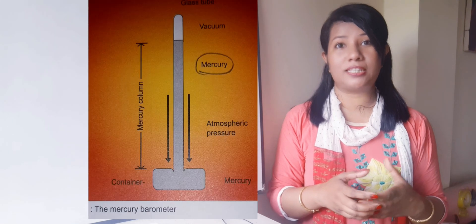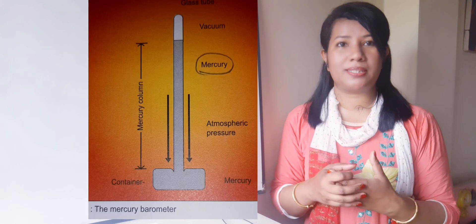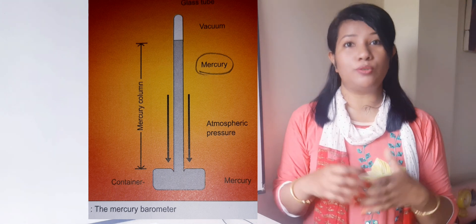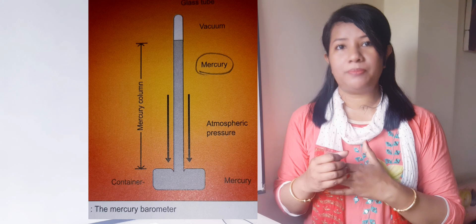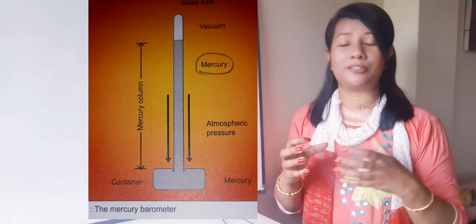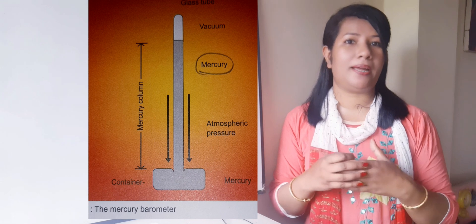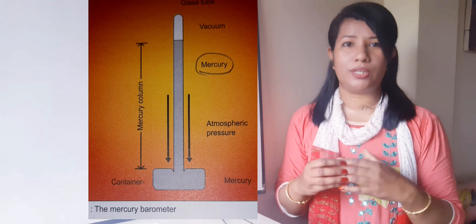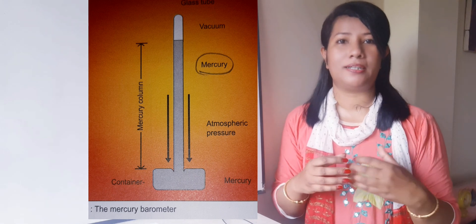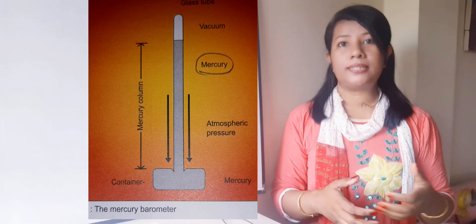Barometer - air pressure is measured by using an instrument known as barometer. Mercury barometer consists of a glass tube sealed at the upper end. The surface is exposed to air and the lower end is submerged in an open container of mercury.